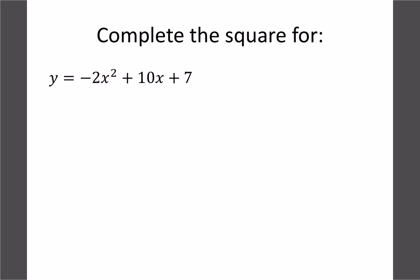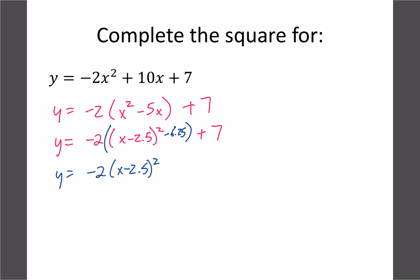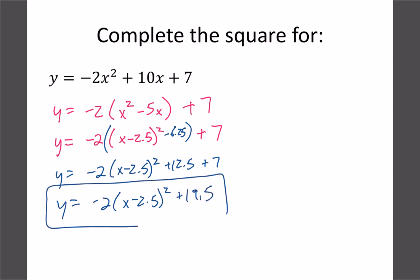One more example with a negative coefficient: negative 2x squared minus 5x plus 7. Factor out negative 2 from the x terms to get negative 2(x squared minus 2.5x), leaving the plus 7 for later. Half of 2.5 is 2.5, wait — half of 5 is 2.5, so we get x minus 2.5. The magic number is 2.5 times 2.5 equals 6.25. Multiplied by negative 2: negative 6.25 times negative 2 gives plus 12.5. Final answer: negative 2(x minus 2.5) squared plus 12.5 plus 7, giving negative 2(x minus 2.5) squared plus 19.5.